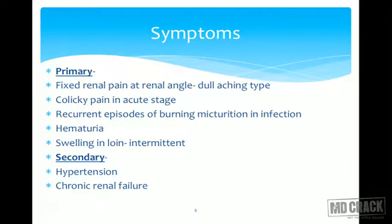The common clinical features of hydronephrosis include: primary symptoms of fixed renal pain at the renal angle, typically a dull aching and continuous pain. In acute stages there can be colicky pain, but this is relatively rare. Recurrent episodes of burning micturition are present due to associated urinary tract infection. Patients may present with hematuria, and rarely with intermittent swelling in the loin. Secondary symptoms include hypertension due to pyelo-interstitial or pyelotubular backflow, and chronic renal failure.